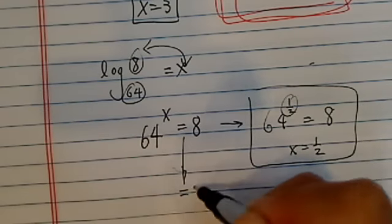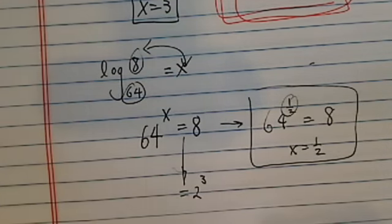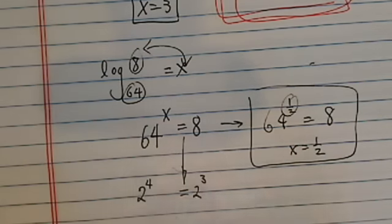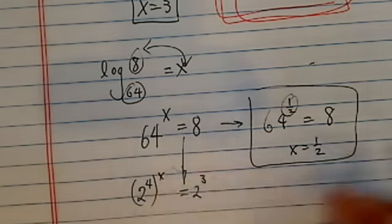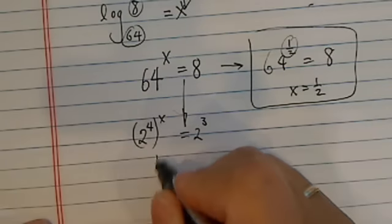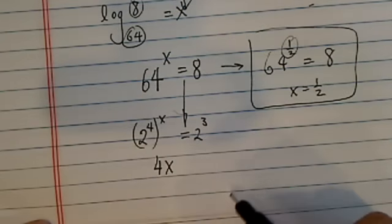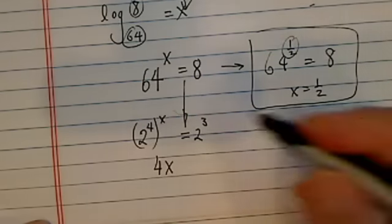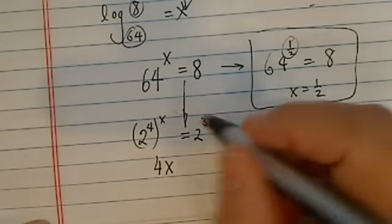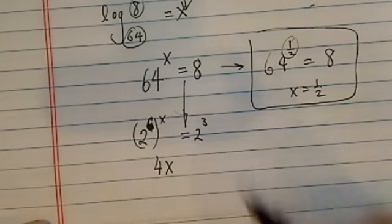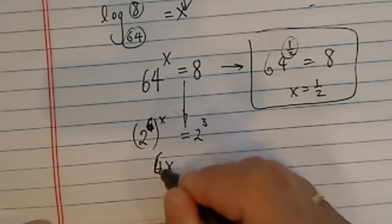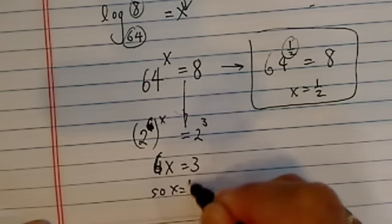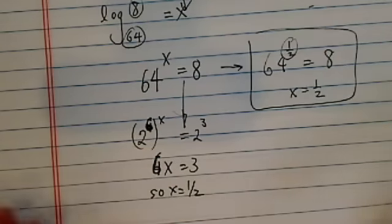So then you do is 2 to the 3rd, that's 8. We all know that. So 2 to the 6 is 64 to the x. So I'm trying to match base in that 6x, 2 to the 3. My apology here, 2 to the 6 is 64. So 6x here is equal to 3, so x is equal to half as well.